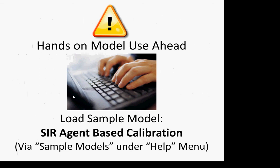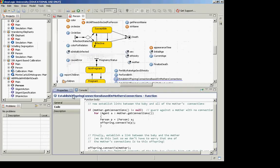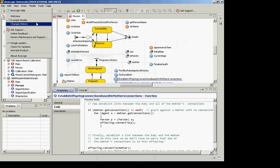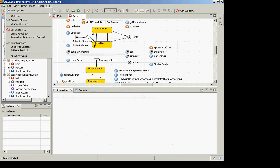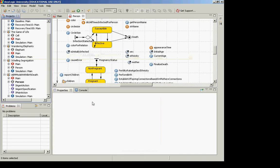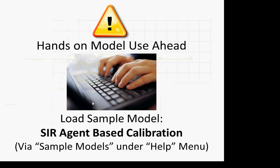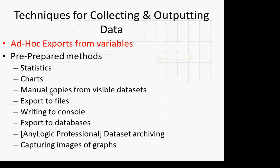What we're going to do in today's session, like in many previous sessions, is go through an actual model, interact with it, and see how we can save away data. I'd like you to open up a sample model — the SIR agent-based calibration model. You can find it under Help > Example Models as 'SIR agent-based calibration.' I have mine open right now so I'm going to close it and we'll go through this together.